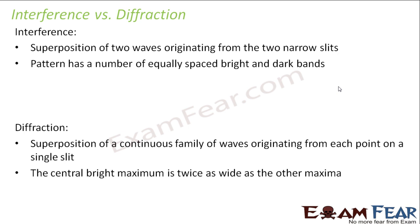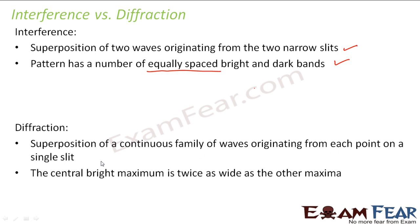Interference is the superposition of two waves originating from two narrow slits, and the pattern has a number of equally spaced bright and dark bands. Diffraction is the superposition of a continuous family of waves originating from each point on a single slit. So inside one slit itself, there is interference going on.